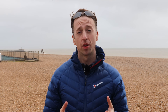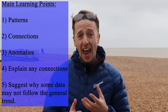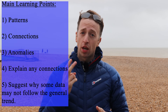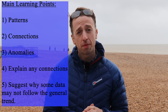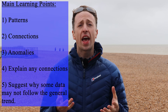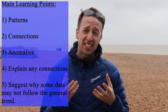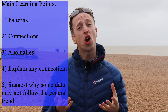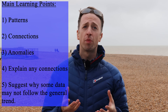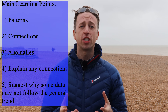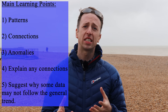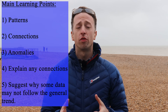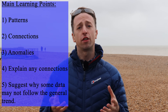There are five things you must do when analysing your data. Number one, highlight any patterns that your data shows. Number two, make connections between different sets of data. Number three, highlight any anomalies — this is data that doesn't appear to show the general trend. Number four, make an explanation for any connections that you have identified. And number five, provide reasons for why some data may not follow the general trends of the rest of your data collection.